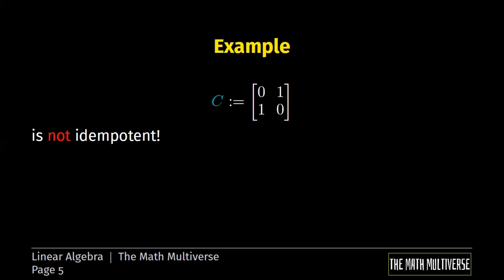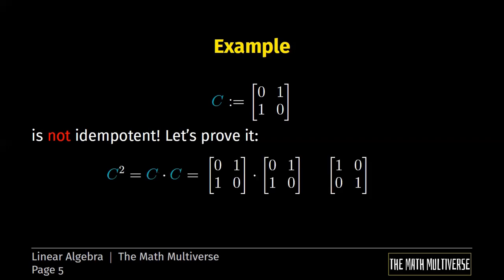In this case, we chose the matrix C, whose entries are 0, 1, 1, 0. Let's prove that this matrix is not idempotent. C times C is equal to a diagonal matrix, as you can see from the easy computations. Then it's not equal to C, which is not diagonal.